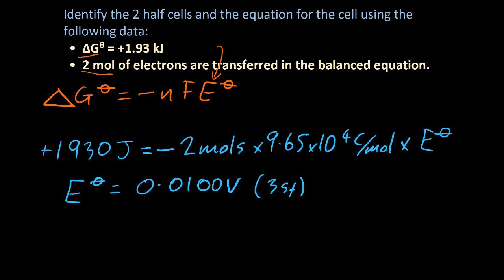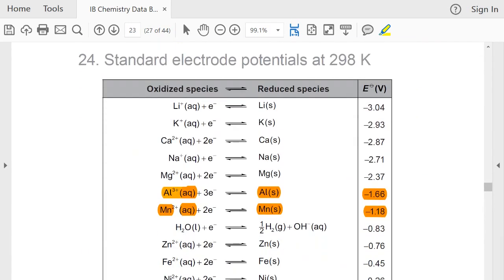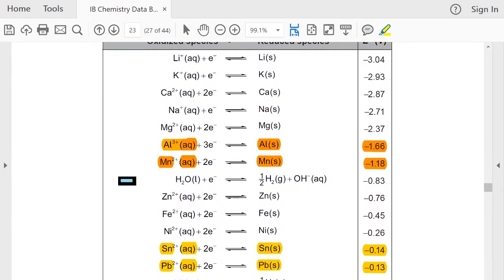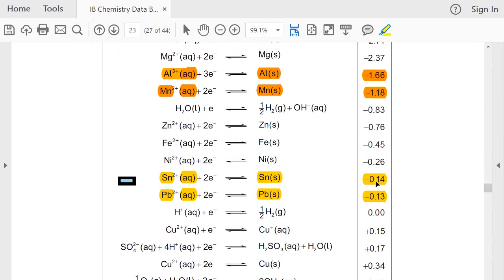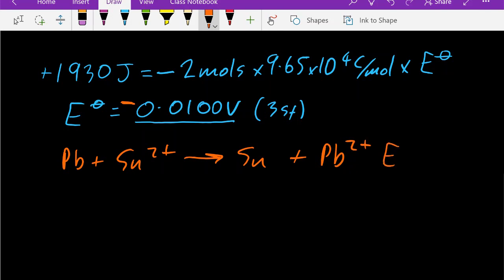So now we've got to look at the data booklet and work out which two half cells will produce that voltage. Scrolling down the list, I'm looking for something with a difference of 0.01. And there it is. Tin and lead. The difference in their standard electrode potentials is 0.01 volts. Now since it's a negative number, the voltage, that means the battery is non-spontaneous, which means the equation you need to flip is the bottom one and then add it to the top one. That gives you a non-spontaneous battery. So lead and the tin ions goes to tin and the lead ions. Now that is a non-spontaneous battery. It just won't do it.